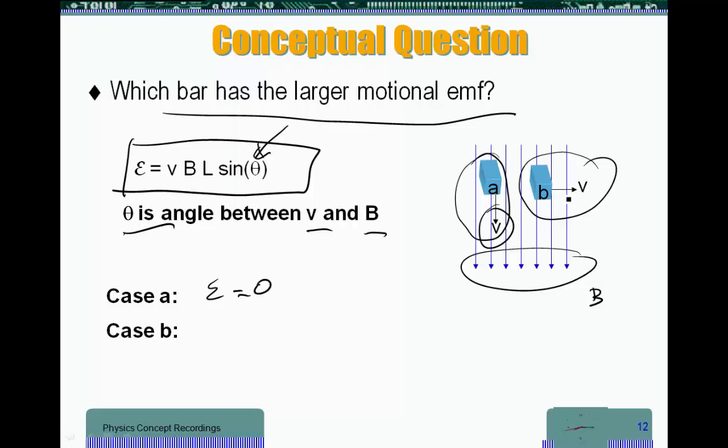In the case of B, V and B are perpendicular, so my EMF is going to be V, B, L.